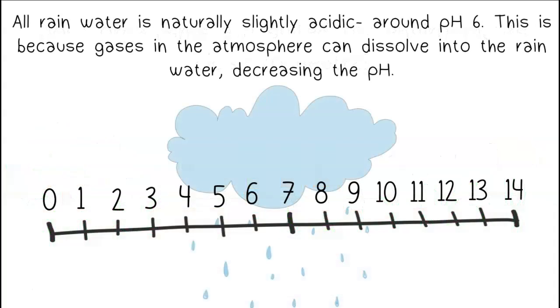All rainwater is naturally slightly acidic, around pH 6. This is because gases in the atmosphere can dissolve into the rainwater, decreasing the pH.